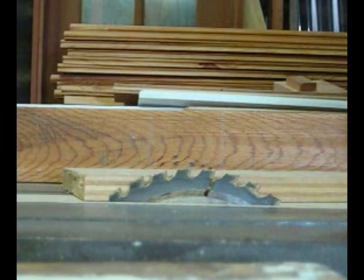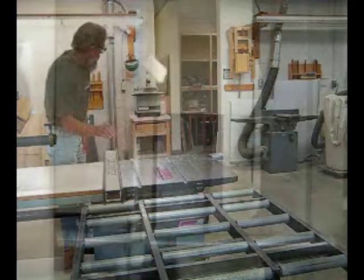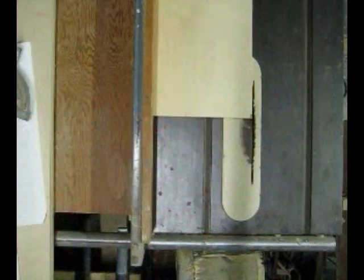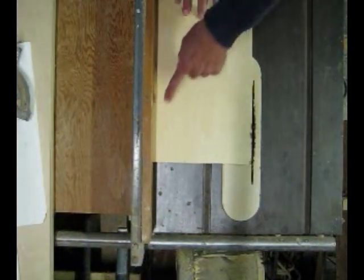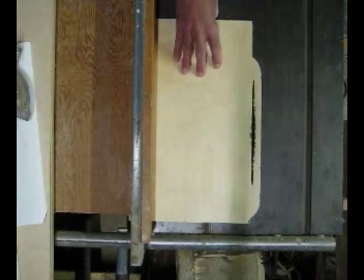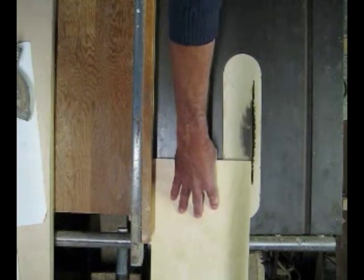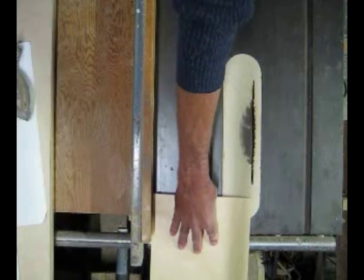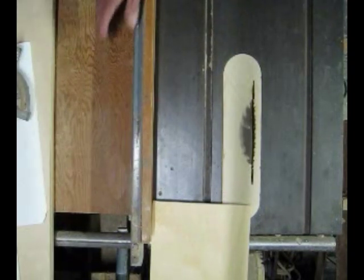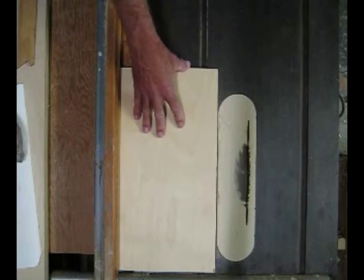As long as you hold the edge of the board against the fence tightly throughout the duration of your cut and you push the board completely past the back of the blade before you release it, you should not get a kickback. Your hand placement and pressure are very important in keeping the edge of the board up against the fence.